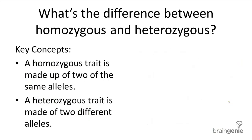Let's have some more examples. Let's say big D codes for dimples and little d is no dimples. So what is the homozygous recessive genotype? Homo means same, so two of the same alleles. And recessive means we're talking about the little letter — so little d, little d.